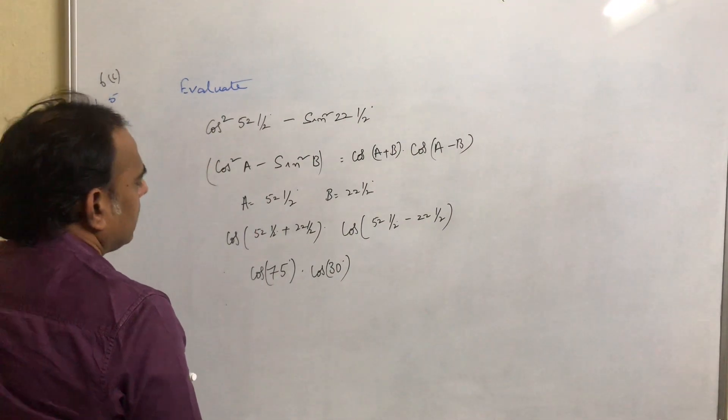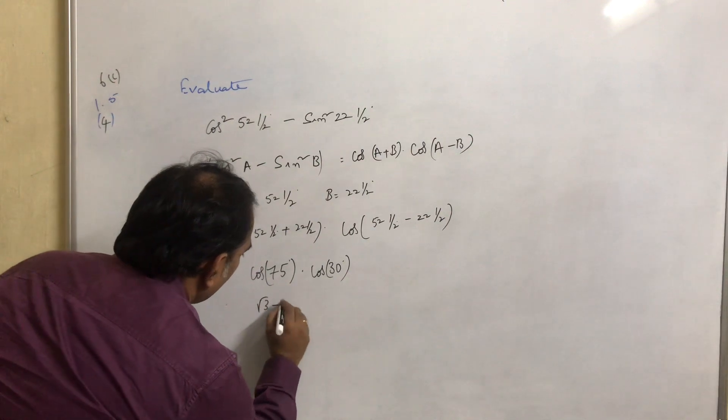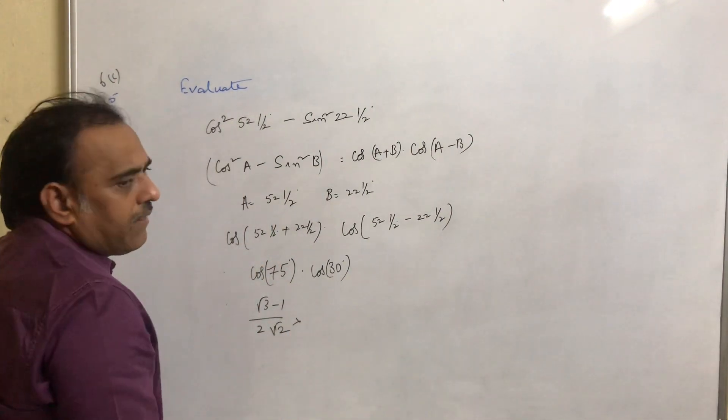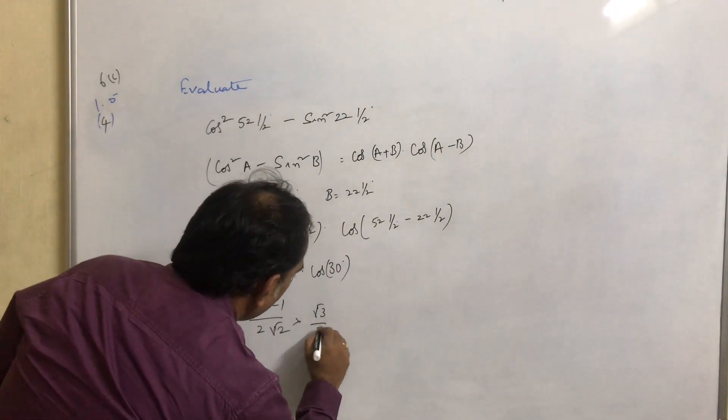Now what is the value of cos 75°? Cos 75° equals (√3 - 1)/(2√2). And what is the value of cos 30°? Cos 30° equals √3/2.